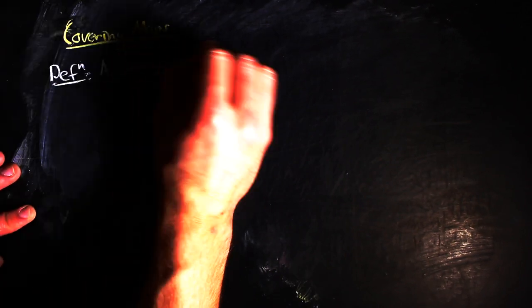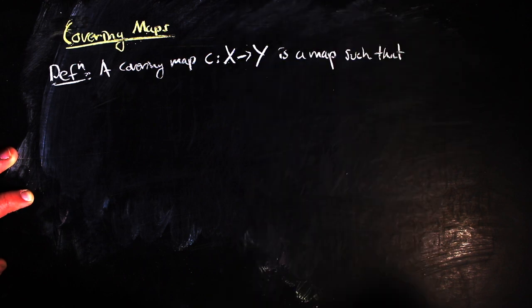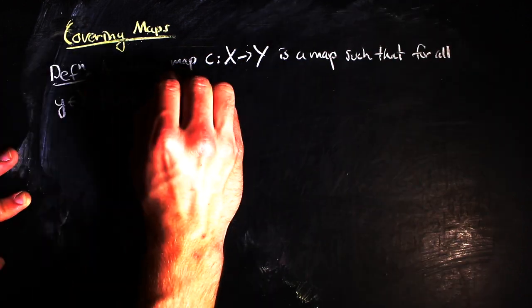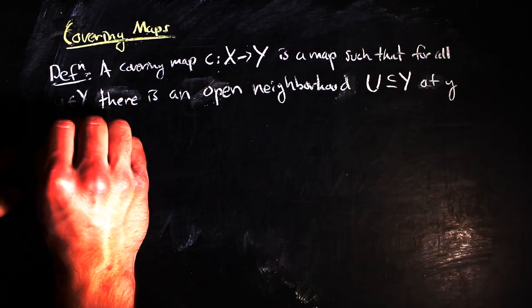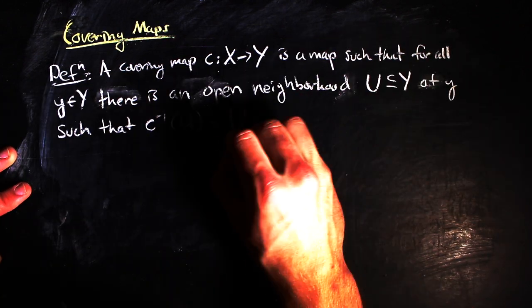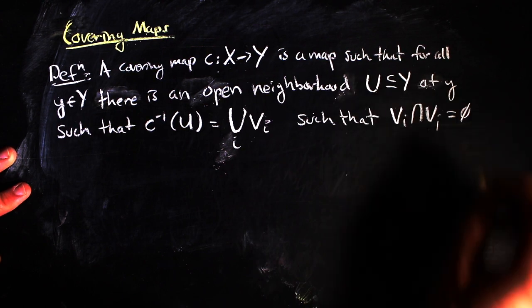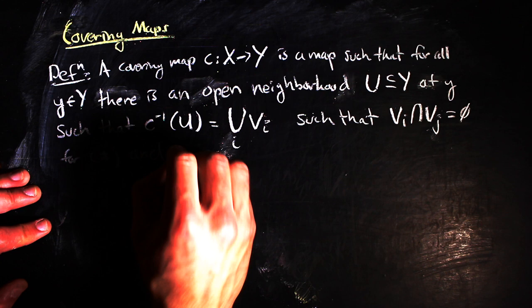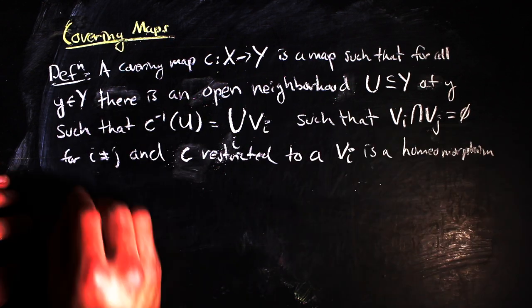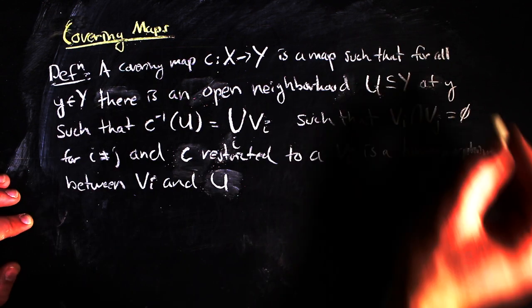First off, a covering map is a mapping between two topological spaces, such that every point in the image space has a neighborhood that is mapped onto by the union of disjoint open sets in the domain space, such that the neighborhood in the image space is homeomorphic to each of the open sets in the domain space that map onto it, and the homeomorphism is given by the restriction of the covering map to one of these open sets in the domain.